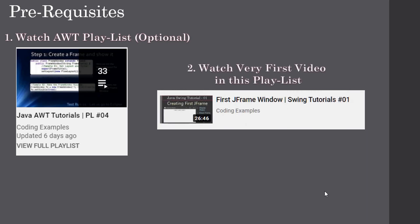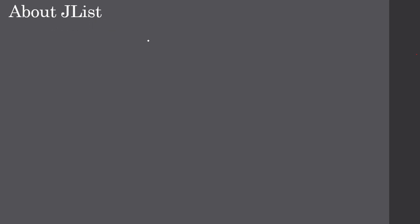This very first video in this series is mandatory — it tells how we create a JFrame window. So if you know how to create a JFrame window you can skip that part and proceed directly to the next part of this video. JList is the component we will focus on.